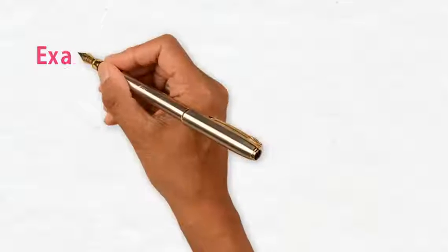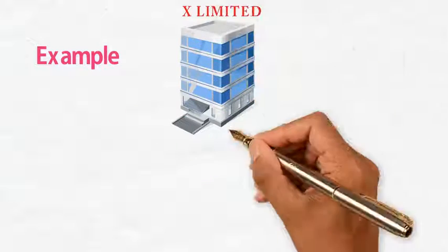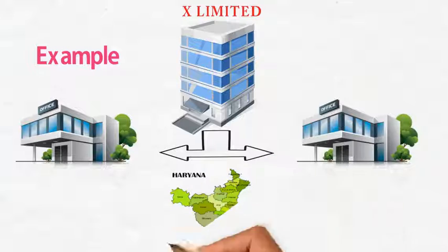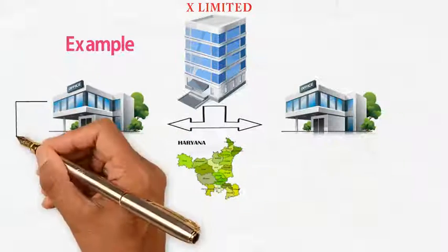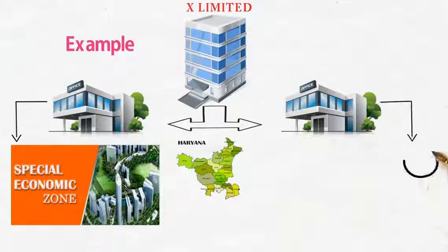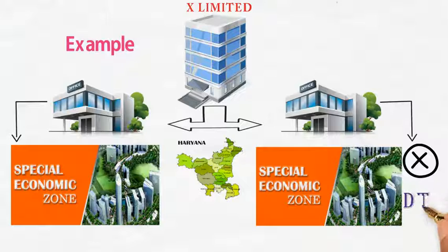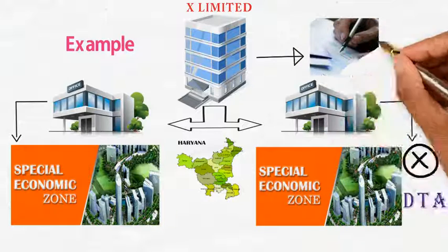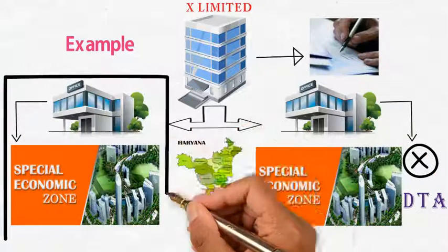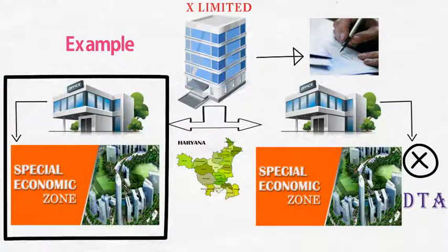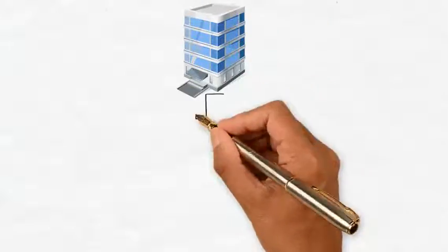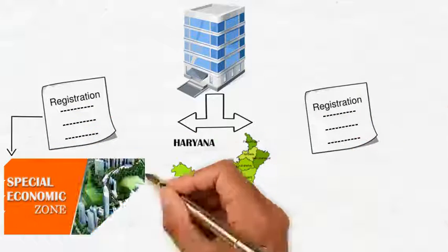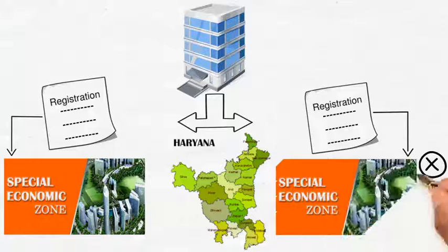To cite an example: Company X Limited has two offices in Haryana — one office is in an SEZ area and the other is in a non-SEZ area, say BPK. In such a scenario, X Limited shall make a separate application for its SEZ unit. Therefore, X Limited will have two registrations in Haryana: one for the SEZ unit and one for the non-SEZ unit.